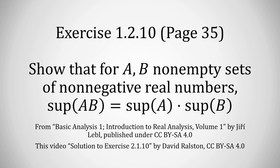We're going to take a look at exercise 1.2.10, on page 35 of Basic Analysis 1: Introduction to Real Analysis. Show that if A and B are non-empty sets of non-negative real numbers, then the supremum of A times B is equal to the supremum of A times the supremum of B.